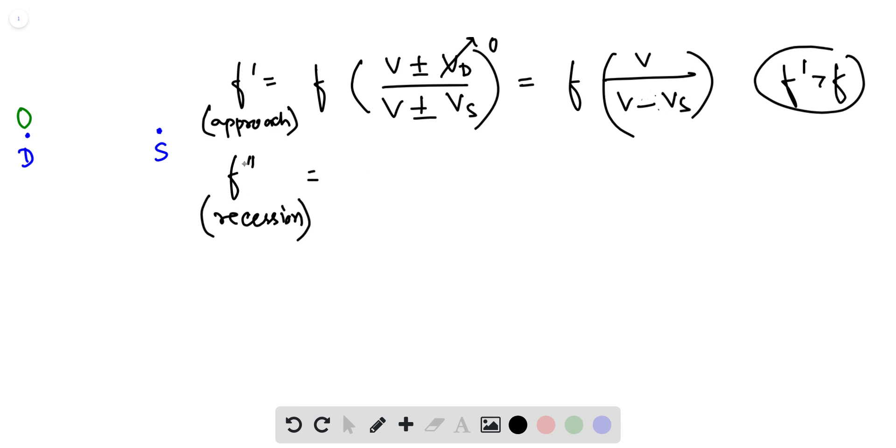Now similarly for the recession case. In that case, the wave is going back to the source from the detector. According to the observer, this will see that the wave is going away from the detector.